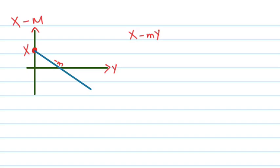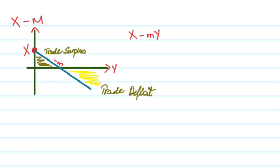I'll show you some regions. This region over here, where exports are greater than your imports, is called trade surplus. This region over here, where your imports are greater than your exports, is known as trade deficit. And the point where exports equals imports, this is balanced trade.